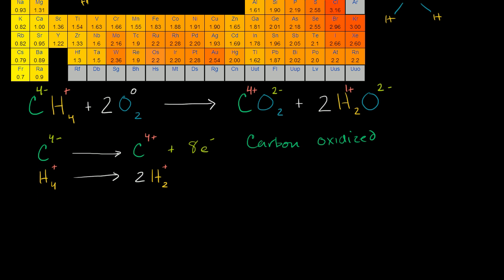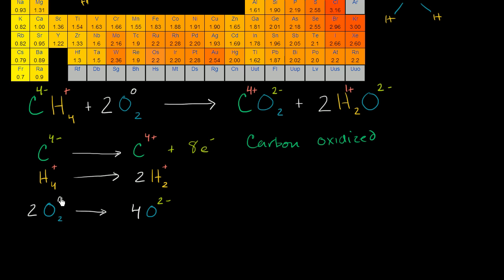Now let's think about the oxygens. On the left-hand side, you have two O₂s with a neutral oxidation number. On the right-hand side, you have four total oxygens — and what's each of their oxidation numbers? It's negative two. So I have four oxygens with an oxidation number of zero, and here I have four oxygens with a negative oxidation number. Each of them must have gained two electrons. With four oxygens, each gaining two electrons, that's a gain of eight electrons total.